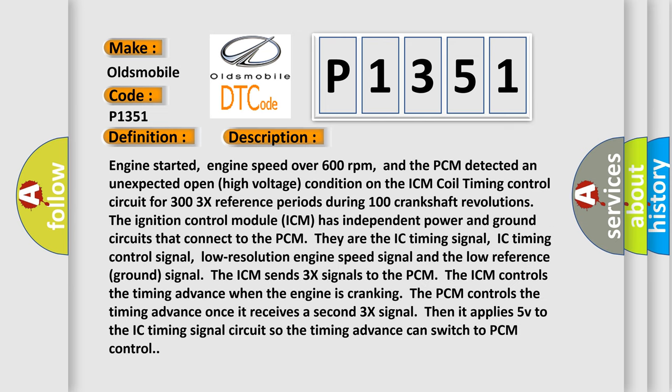Engine started, engine speed over 600 revolutions per minute, and the PCM detected an unexpected open high voltage condition on the ICM coil timing control circuit for 303X reference periods during 100 crankshaft revolutions. The ignition control module (ICM) has independent power and ground circuits that connect to the PCM. These are the IC timing signal, IC timing control signal, low resolution engine speed signal, and the low reference ground signal.